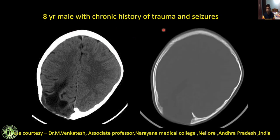Next: an 8-year male with chronic history of trauma and seizures. There is gliosis and a CSF density cystic lesion in the right parietal lobe causing erosion, remodeling, and expansion of the bone with defects in the underlying parietal bone. This is a case of growing skull fracture or leptomeningeal cyst. Thanks to Dr. Venkatesh for contributing this case.